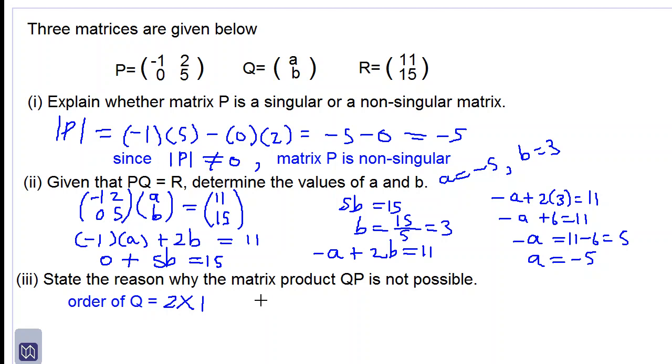Let's look at the order of P now. Order of P is equal to 2 rows by 2 columns. This is row 1 and row 2. So it's 2 rows by 2 columns, column 1, column 2.